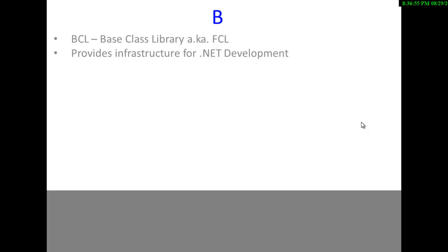If you have any background in C or C++ kind of programming languages, you must have noticed something like adding hash include stdio. That thing provides infrastructure for development in C and C++. Similarly, when you do 'using' in C# and 'imports' in Visual Basic .NET, you are either using or importing a namespace, like 'using System' or 'using System.Data'.